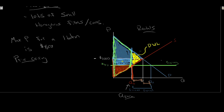Producers are definitely the losers — their surplus used to be quite a bit larger. Consumers have likely won: they gained a box and lost a little triangle, and likely the box is bigger. Society overall? Boo — society overall is actually worse off. We've had a deadweight loss, bringing our total social surplus down. Government getting involved in an allocatively efficient market by imposing a price ceiling has the effect of lowering total surplus and thus creating an inefficient situation.